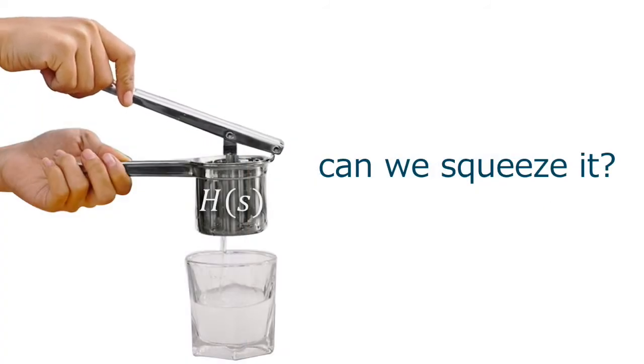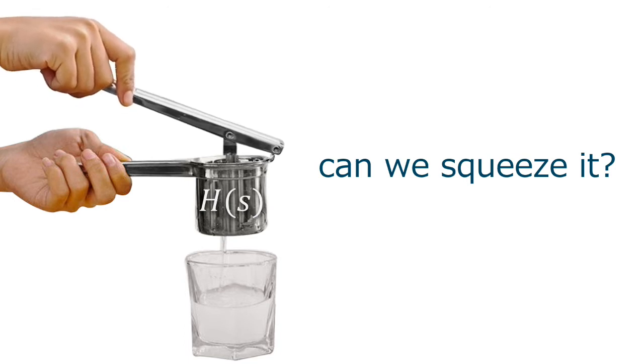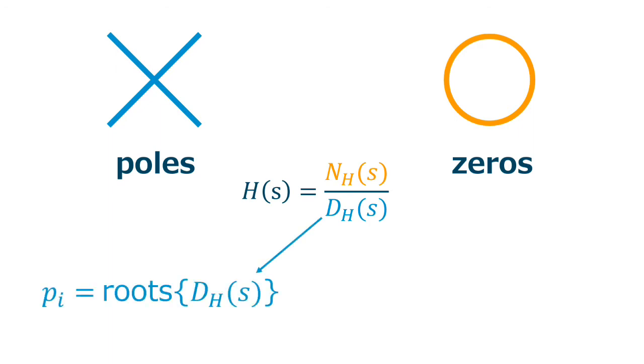Okay, so now we have the transfer function. What can we do? Can we squeeze it? Yes, we can. The first thing we will get from it are the poles and the zeros. You will be breathing poles and zeros by the end of this semester, I promise you. The poles are the roots of the denominator polynomial. And the zeros are the roots of the numerator polynomial. And these poles and zeros live in the complex plane. They can have both real and imaginary parts.